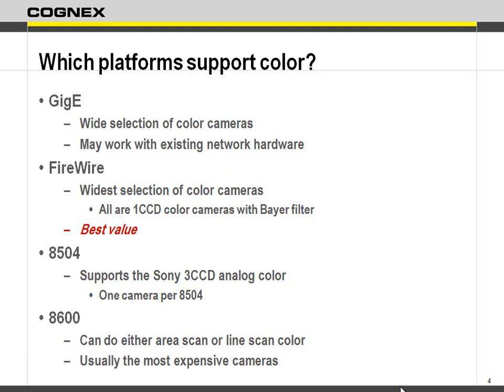On the 8504 — and I need to say 8504, not the 8501 — I need to have four A-to-D converters. That's because the analog color camera, the Sony 3-CCD, actually acquires the image on three separate CCDs: one for red, one for green, one for blue — a simultaneous acquisition all at the same time. That's why I need the 8504, to bring in three channels simultaneously. Finally, the 8600 with Camera Link supports color as well, both area scan and line scan cameras, though it will be your most expensive but gives you the most pixels and fastest speed.